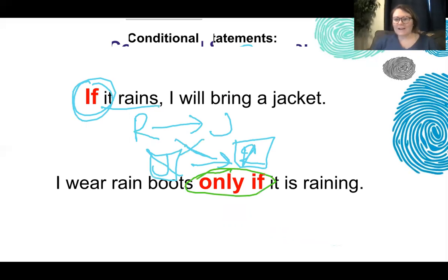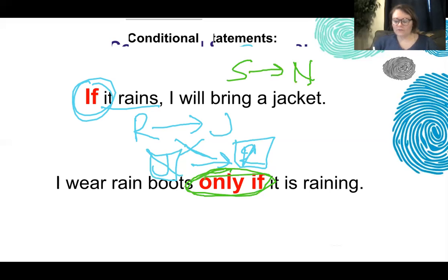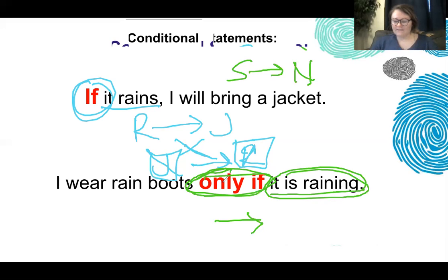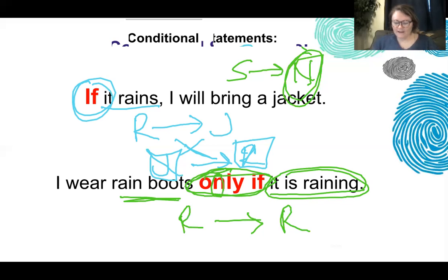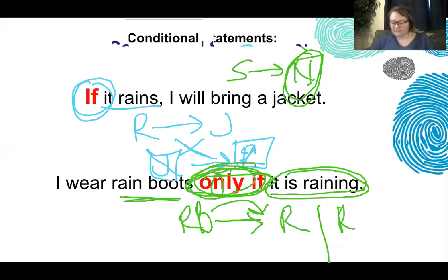'Only if' introduces the necessary condition — it goes on the right side of the arrow. Example: I wear rain boots only if it's raining. So 'raining' becomes our necessary condition on the right side. Our sufficient condition is wearing rain boots. Because if I wear rain boots, that means it's raining — I only wear rain boots when it is raining. So if it's not raining, I do not wear rain boots.